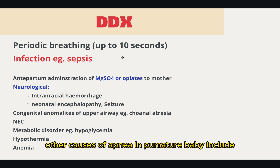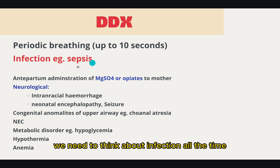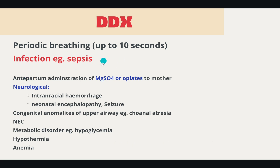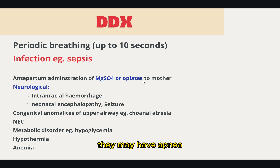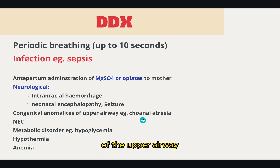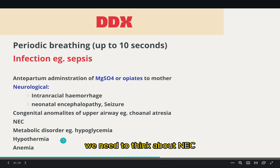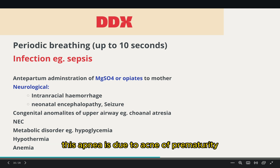Other causes of apnea in premature babies include: infection, especially sepsis — we need to think about infection every time. Also, if antenatally the mother received magnesium sulfate or opiates, the baby may have apnea. Neurologically, intracranial hemorrhage, intraventricular hemorrhage, neonatal encephalopathy, or seizure may cause apnea. Congenital abnormalities of the upper airway like choanal atresia may cause apnea. In premature babies we need to think about NEC. Metabolic causes like hypoglycemia, hypothermia, and anemia can also lead to apnea. Therefore, we must rule all of these out before we say the apnea is due to apnea of prematurity.